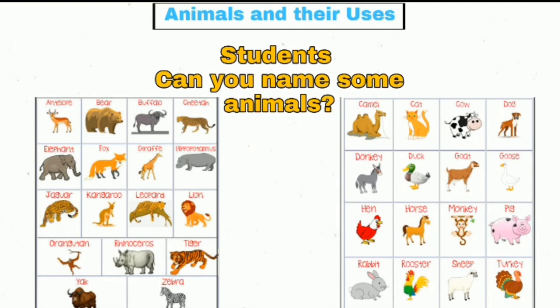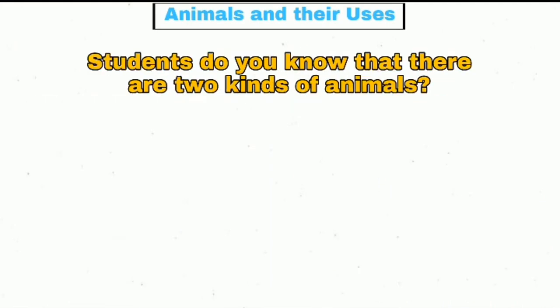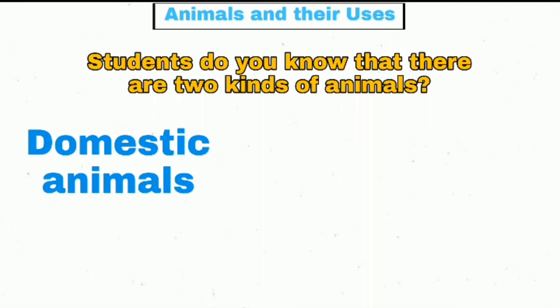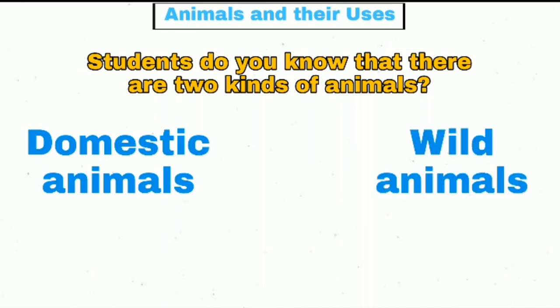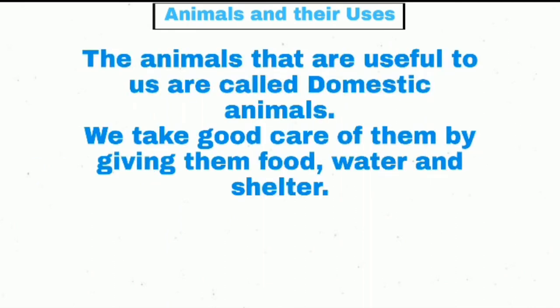Students, do you know that there are two kinds of animals? They are domestic animals and wild animals. The animals that are useful to us are called domestic animals. We take good care of them by giving them food,